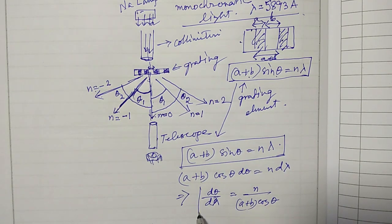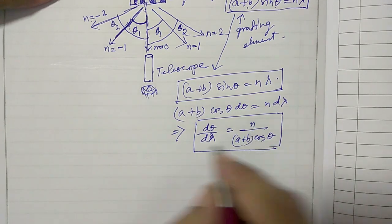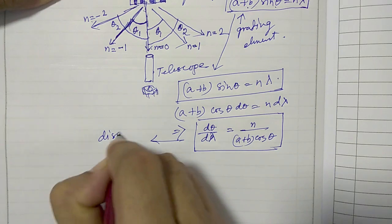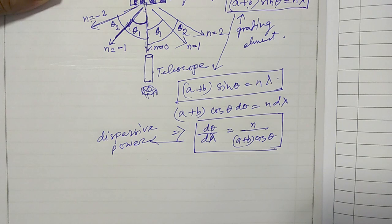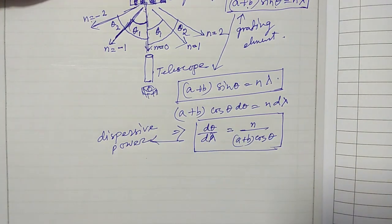And this quantity is called the dispersive power. This is called the dispersive power. And we are going to calculate this quantity in this experiment.